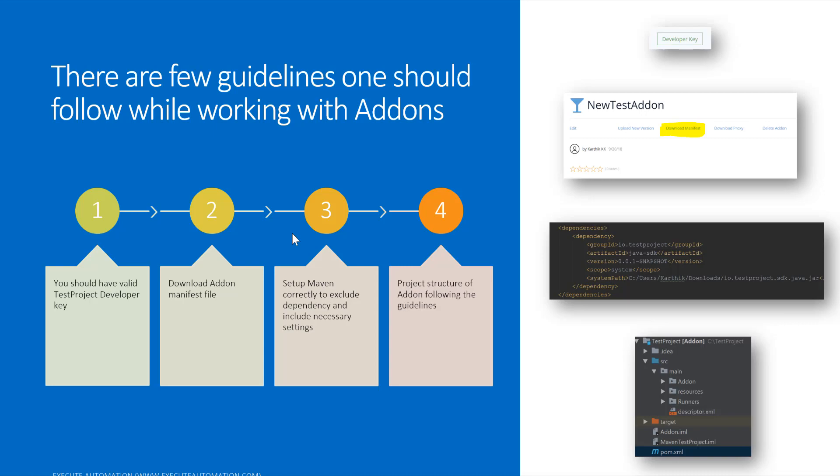Finally, you need to follow a specific project structure for the add-on by following some guidelines. In my case, I have a Maven project with an SRC main folder structure. There are also three additional folders: add-on, resources, and runner, plus a descriptor.xml file. These files and folders are necessary for your add-on to be tested and uploaded to test project. The guidelines are pretty much the same for page object models with a few differences.